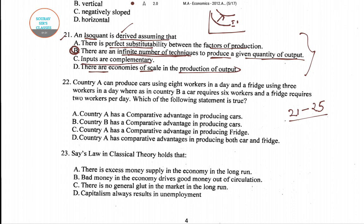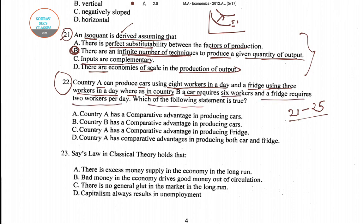For question number 22: Country A can produce cars using eight workers in a day and a fridge using three workers in a day, whereas in Country B a car requires six workers and a fridge requires two workers per day. Which of the following statements is true? Option A: Country A has a comparative advantage in producing cars. Option B: Country B has a comparative advantage in producing cars. Option C: Country A has a comparative advantage in producing fridge. Option D: Country A has a comparative advantage in producing both.